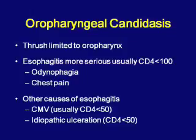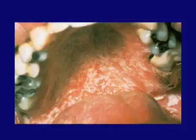Oral hairy leukoplakia is caused by Epstein-Barr virus and requires no treatment. When examining the tongue, it is distinguished from thrush by corrugations along the lateral aspect. Thrush can be scraped off without bleeding, whereas oral hairy leukoplakia cannot be scraped off without pain and bleeding.